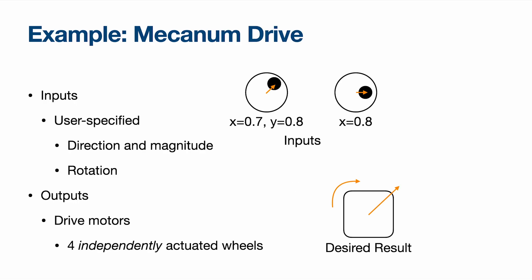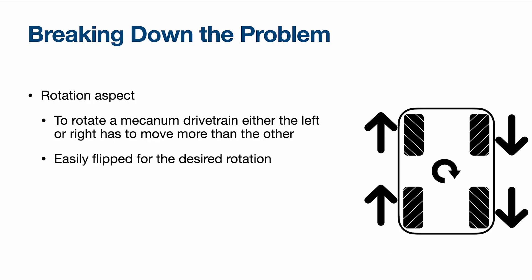An example is for Mechanum drives. You have inputs such as the drivetrain movement where you have the stick pointed to the top right on the left and to the right on the right, asking it to move and turn that way, as you can see in the bottom right image. This is done with four independently actuated wheels. For the rotation aspect, all you have to do is move the left side forwards and the right side backwards to rotate the robot. It's relatively simple — just proportional to the amount the right stick has moved.